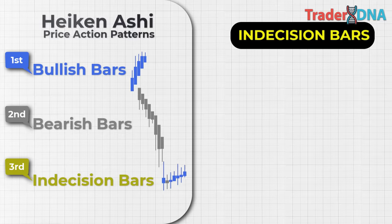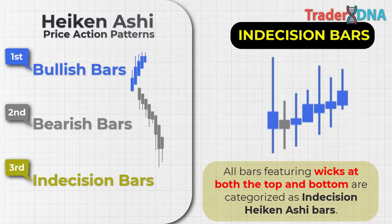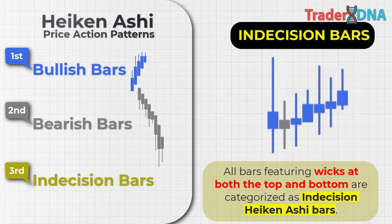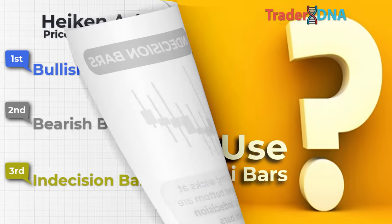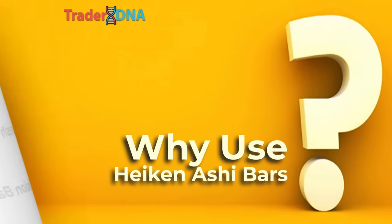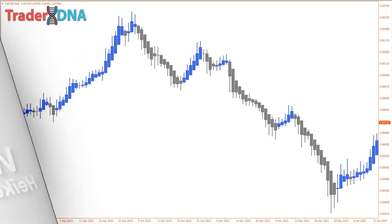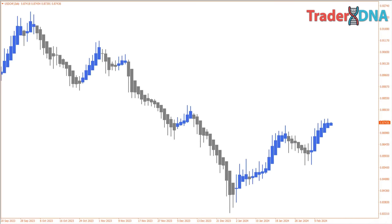Indecision Heikin Ashi bars are all bars featuring wicks at both the top and bottom. Regardless of the bar's color — bullish or bearish — the presence of wicks on both ends denotes market indecision. Now that you understand what Heikin Ashi bars are and are familiar with the three different types of Heikin Ashi price action patterns, why use Heikin Ashi bars for trading? The answer lies in its ability to simplify trade entry and exit decisions.